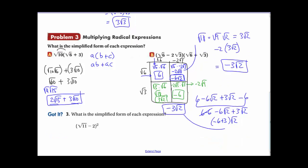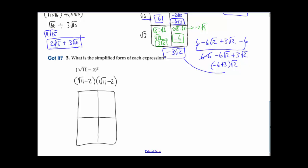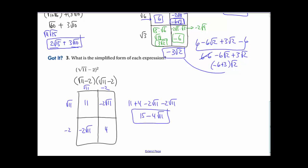Now I want you to hit pause and try this: simplify radical 11 minus 2, squared. Remember, this means radical 11 minus 2 times radical 11 minus 2 — a binomial times a binomial. Draw your boxes, place the numbers in the right places, multiply, and check your answers in a couple minutes. Welcome back. Hopefully by multiplying and simplifying the binomial times the binomial, you ended up with 15 minus 4 radical 11.